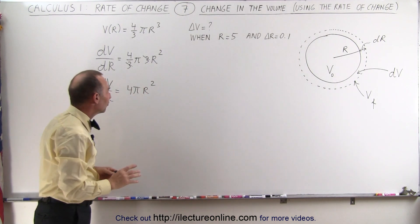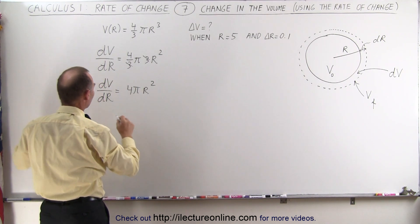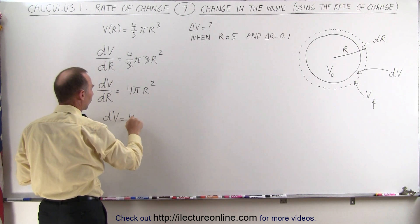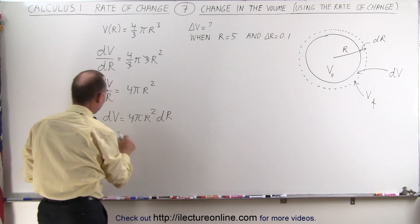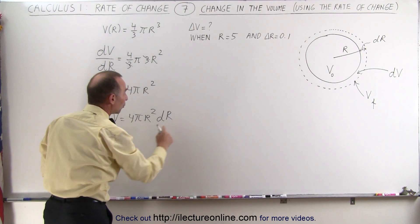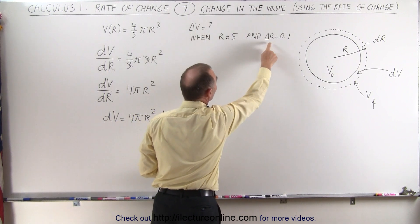And so here what you can see is that if we move the dr over to the other side and write this equation as follows, dV equals 4πr squared dr, then the dV and the dr really means the change in the volume and the change in the radius.